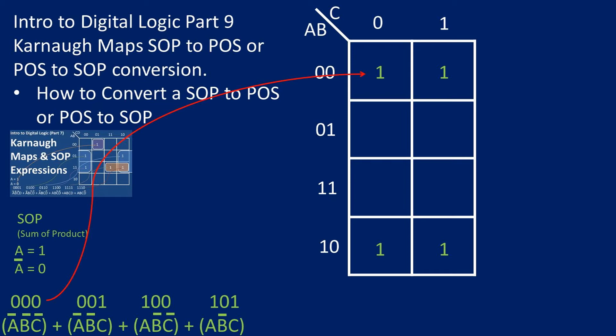We have that A equals zero and B equals zero, which is the first row, and C equals zero, which is the first column. So we can place a one in the first row, first column.